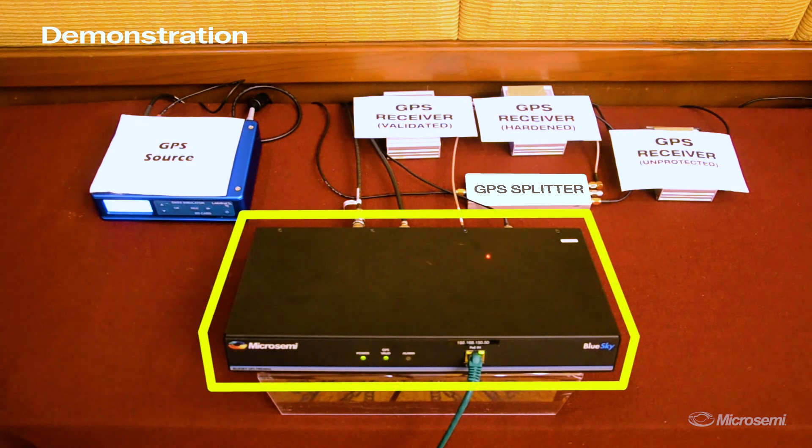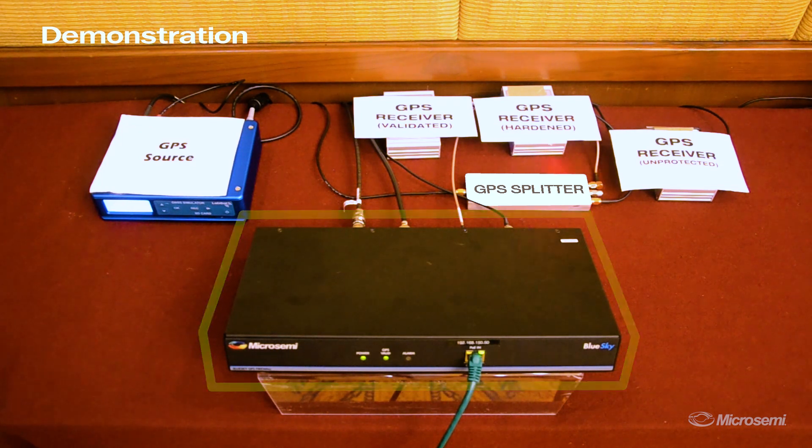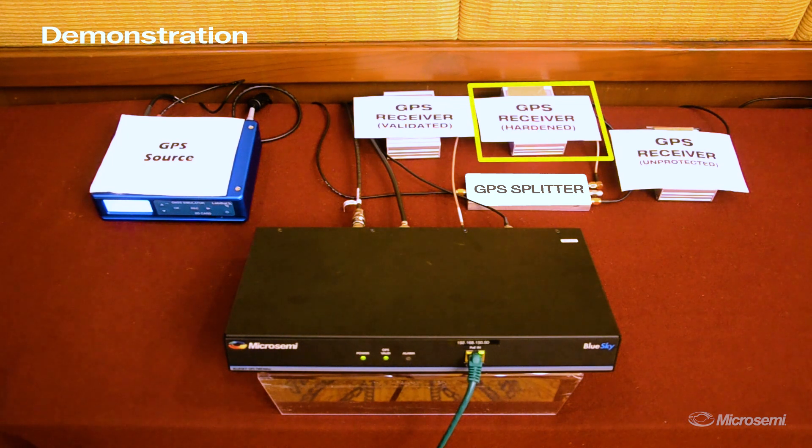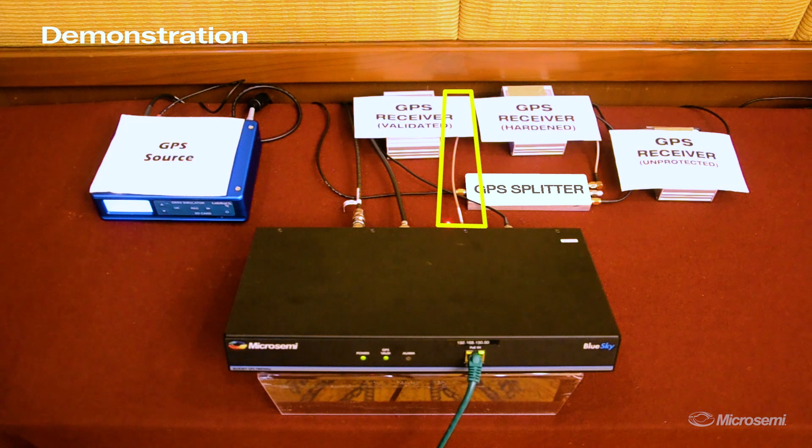The other output from the blue sky GPS receiver, as mentioned earlier, is referred to as the hardened output, and it's connected to a third GPS receiver. Along with this hardened output is a connection into the firewall of a 10 megahertz signal coming from a rubidium atomic source.